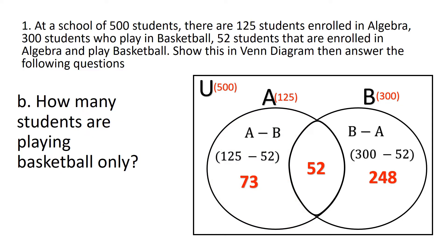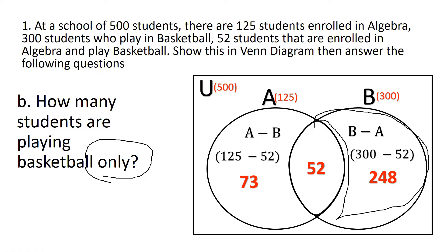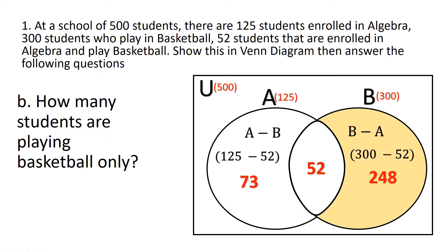Second question: how many students are playing basketball only? Again, we have the word 'only,' so these are the distinct elements of set B. The answer for the second question is the shaded region, and that is 248.